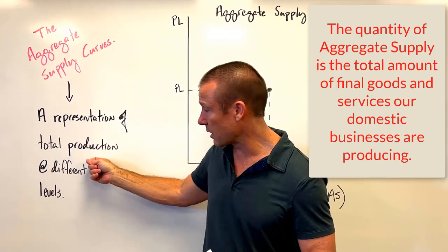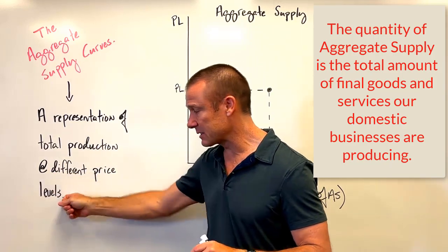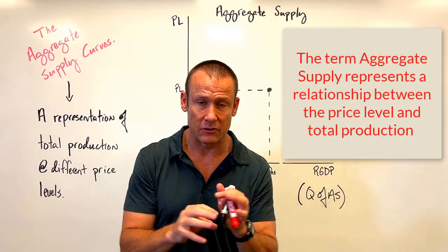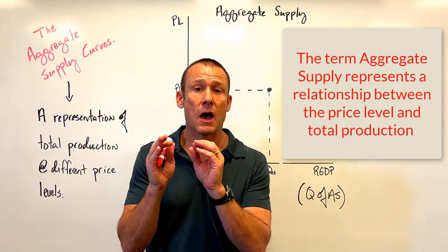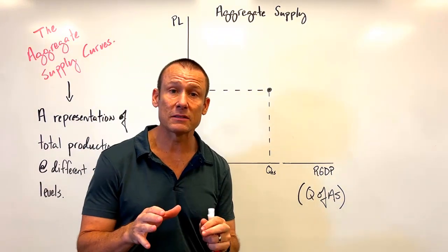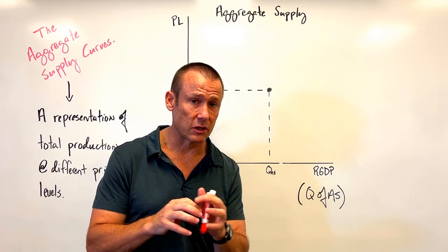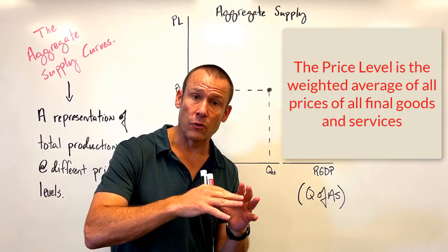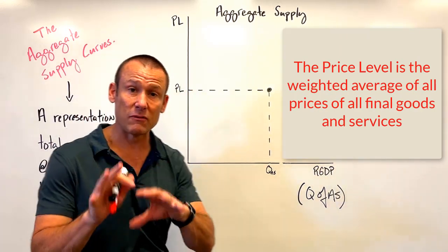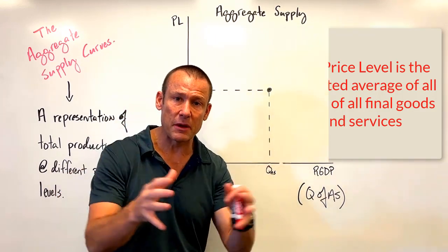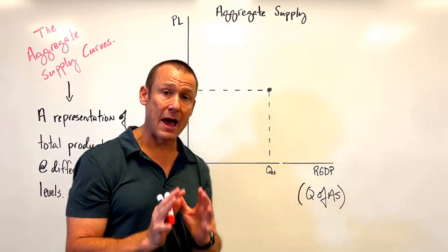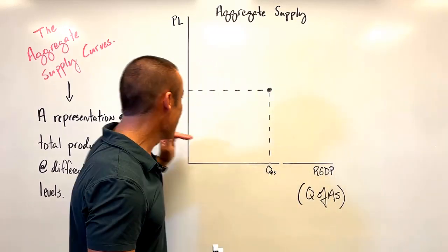Aggregate supply is technically a function — it's a relationship telling us how much our domestic businesses are going to produce at every price level. The price level is the weighted average of all prices of all final goods and services — basically just the level of prices out there in the economy. It's an aggregate measurement of prices in our economy.